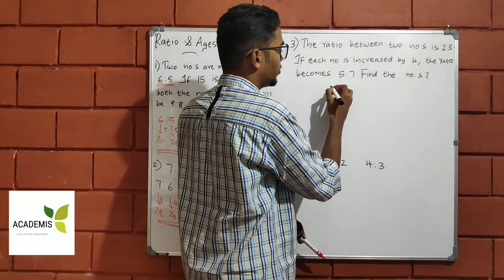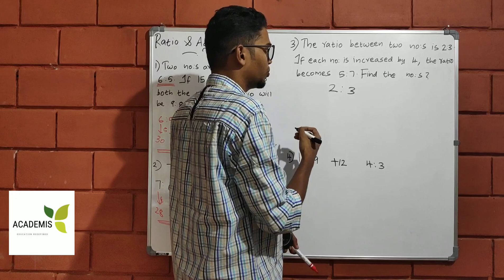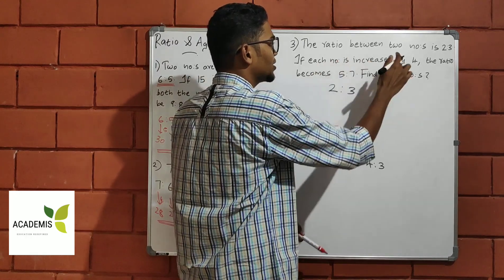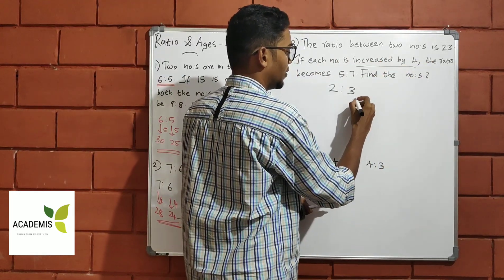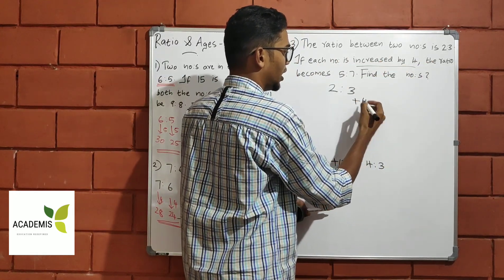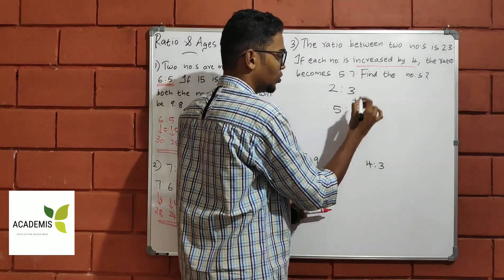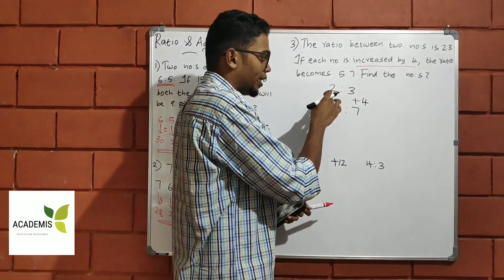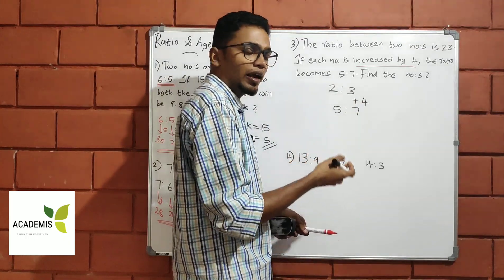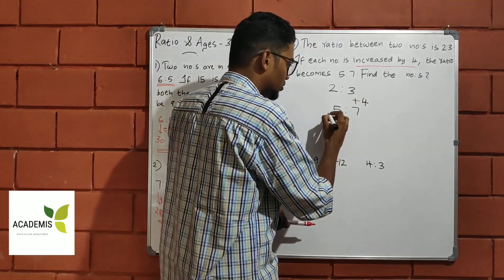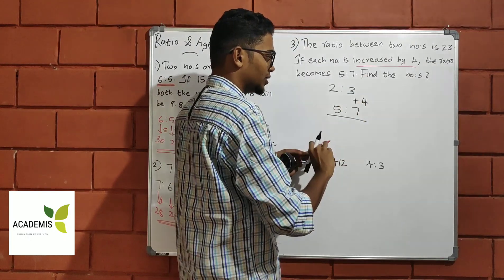Problem 2: The ratio between two numbers is 2 to 3. If each number is increased by 4, the new ratio becomes 5 to 7. We need to check the vertical difference.